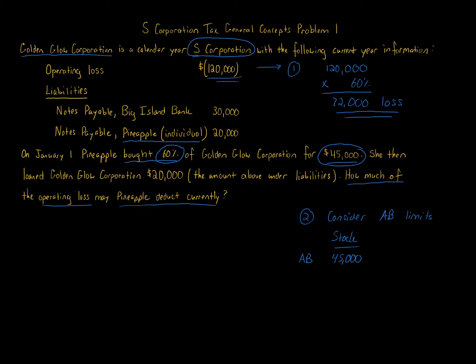Loans to an S corporation create a separate loan basis, but we can still use that loan basis when calculating the amount of loss that can be taken. Looking at the actual liabilities: the note payable to Big Island Bank — that cannot be taken into account in basis. This is a key difference from partnerships, where you get to include your share of all liabilities, whether loaned by a partner or a third party.